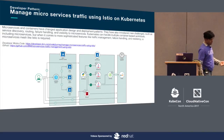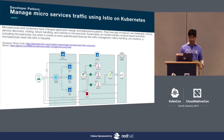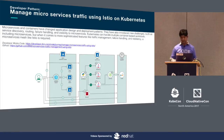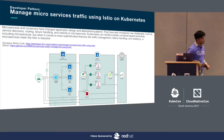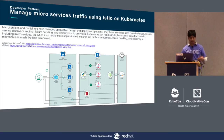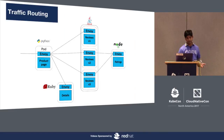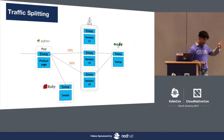Around the same time Istio was launched, we launched a developer pattern showing how you can manage microservices traffic using Istio on Kubernetes. We took the sample Book Info application and added a relational database component to it — the original was static, writing everything to the local file system. This made the application dynamic and also allowed us to show how Istio handles egress traffic where a certain protocol is not supported, for example using JDBC to connect to a relational database. The pattern demonstrates how you can selectively route traffic to different versions of a microservice.